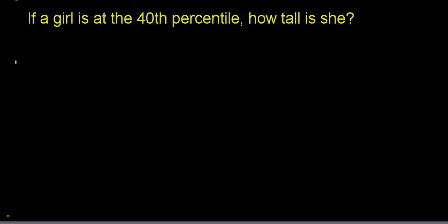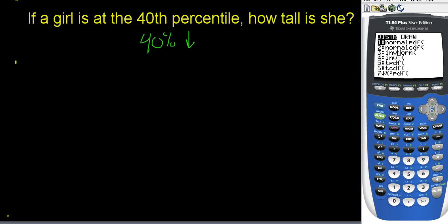If a girl is at the 40th percentile, how tall is she? This means 40% of girls are shorter than her, so I need to work backwards — I know the area below is 40%. This is where I use invNorm. It's a feature on your calculator where you type in the area below, and since percentile is exactly the percent below, I'll type in 0.40.